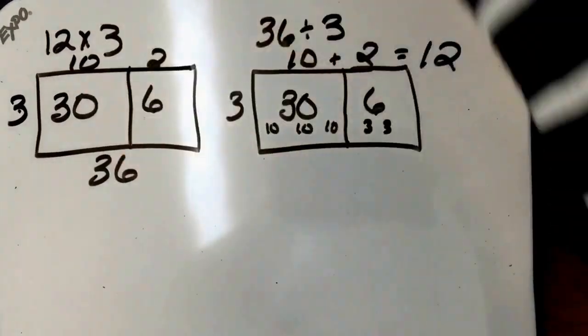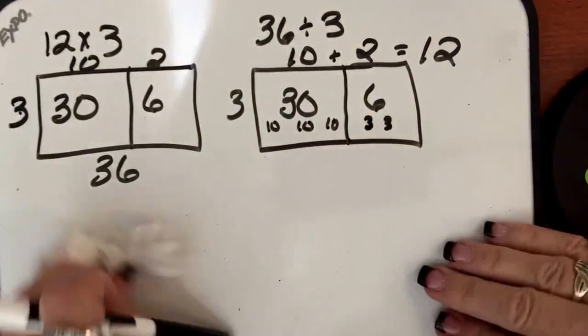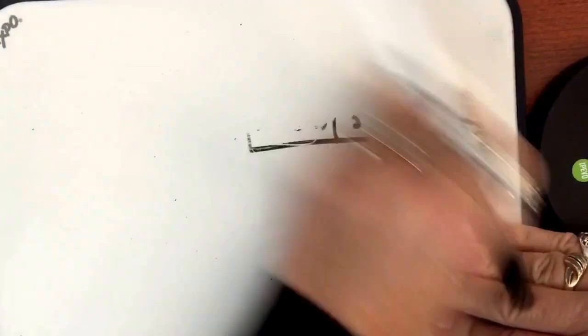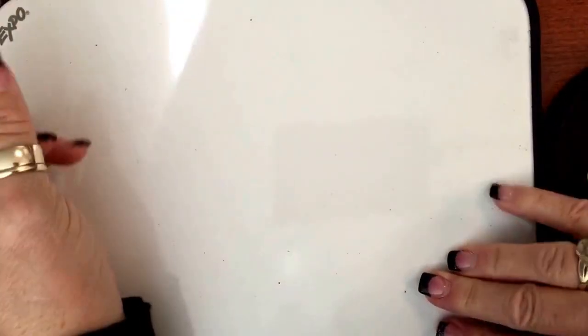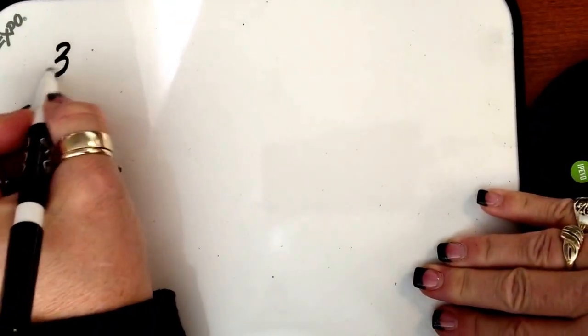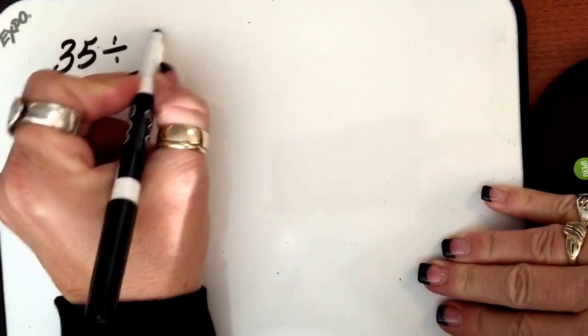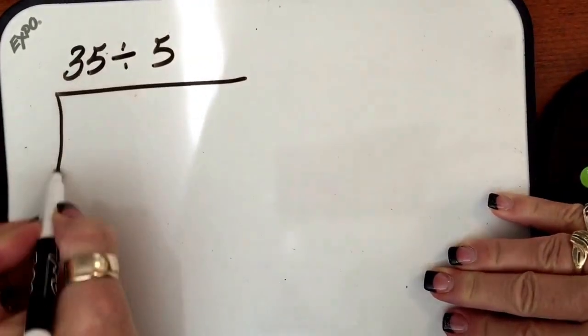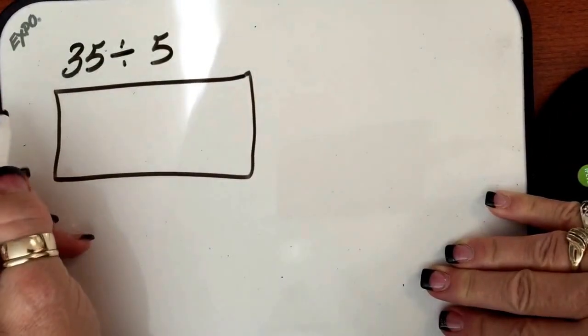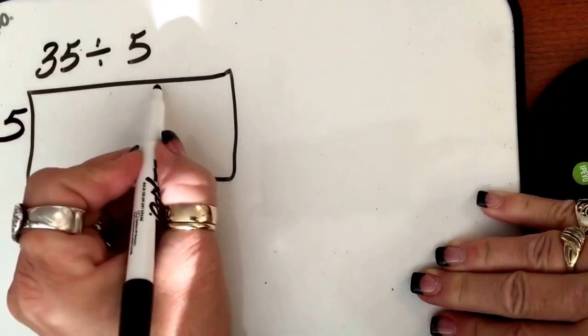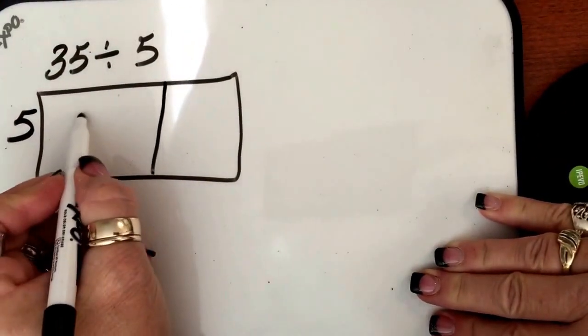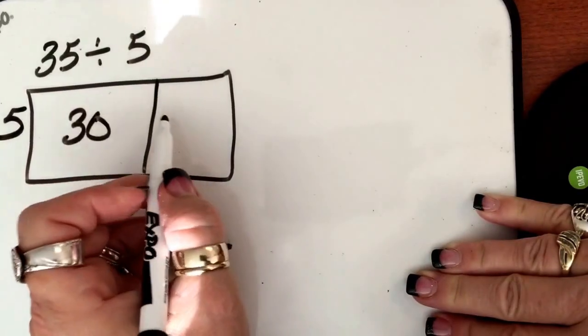Want to do another one? I know you do, because you don't have an option, you're watching the video. Sorry. Alright. So here, let's do 35 divided by 5. And so here's our array. What are we dividing by? We're dividing by 5. And what are we dividing? We're dividing 30, and we're dividing 5.